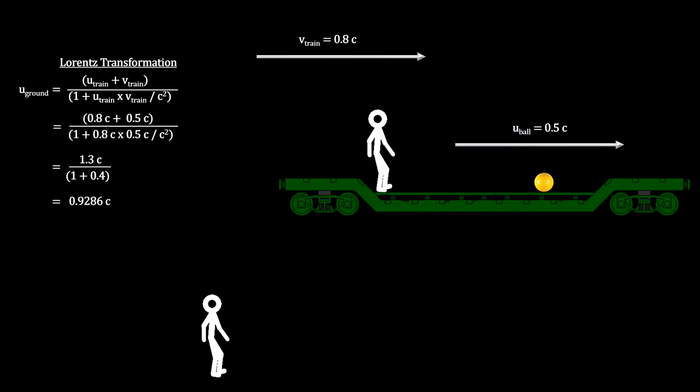But to keep the speed of light a constant, the new relativistic equations tell us the person on the ground would see the ball traveling a lot slower than that, at nine-tenths the speed of light.